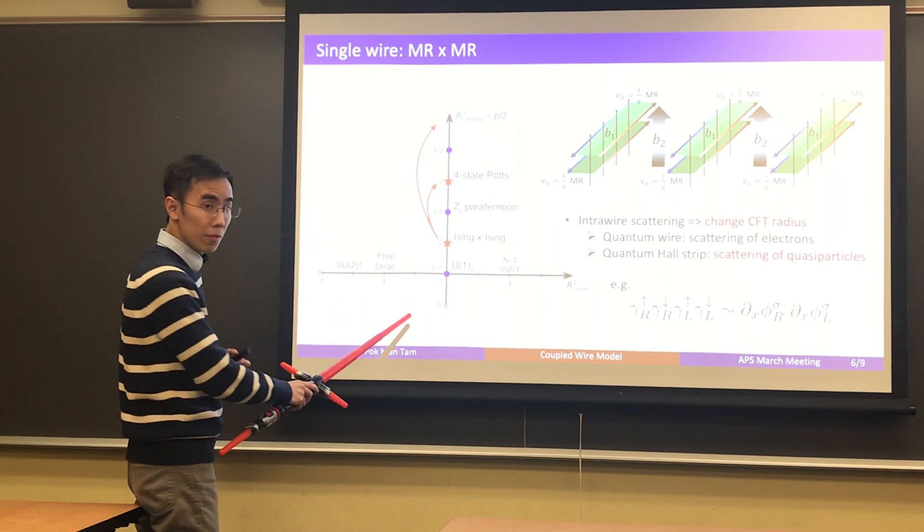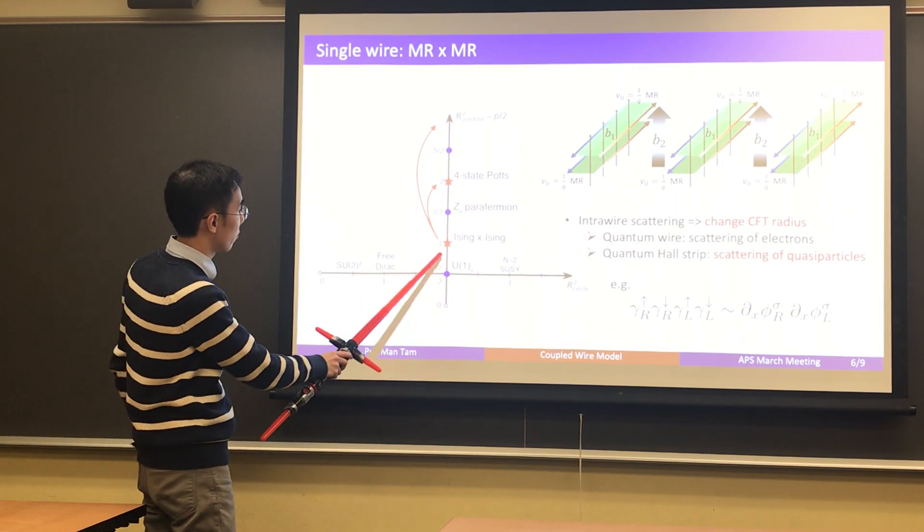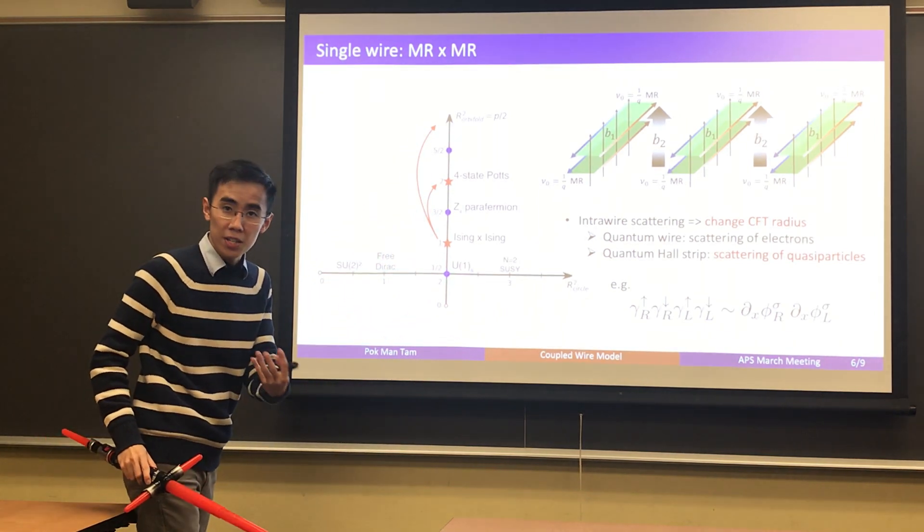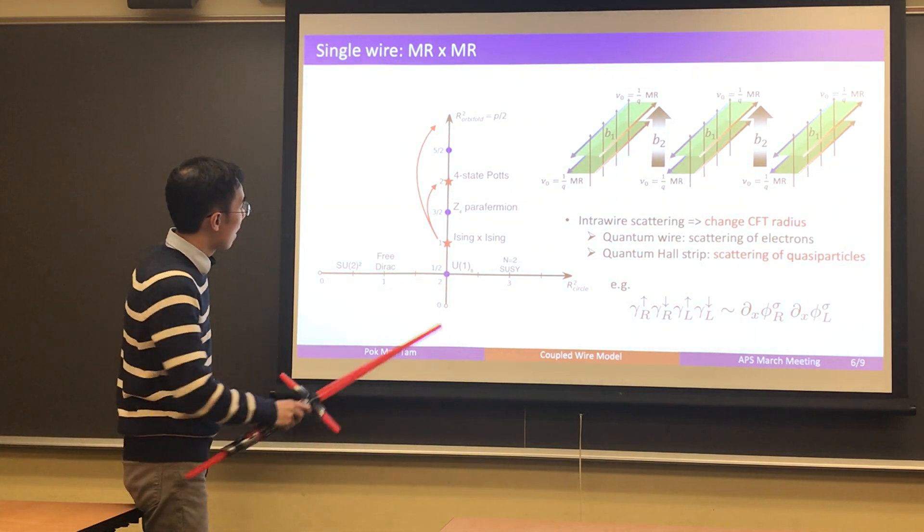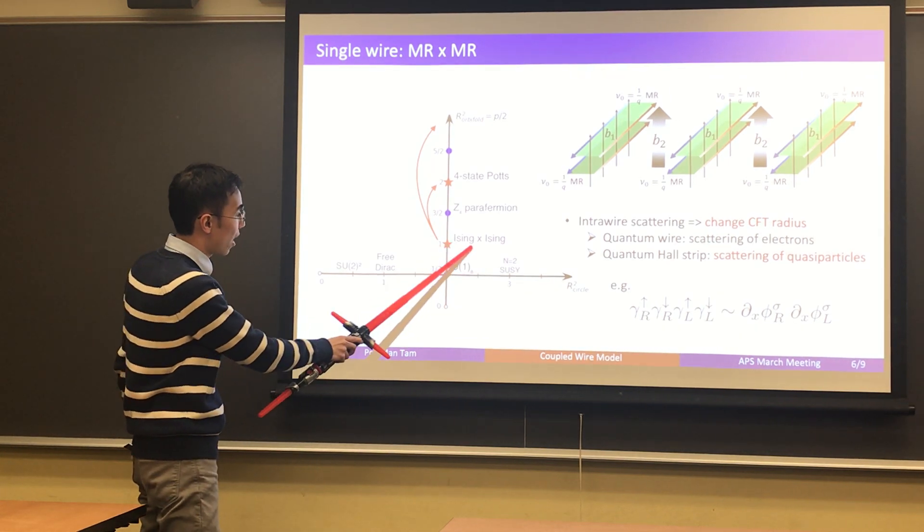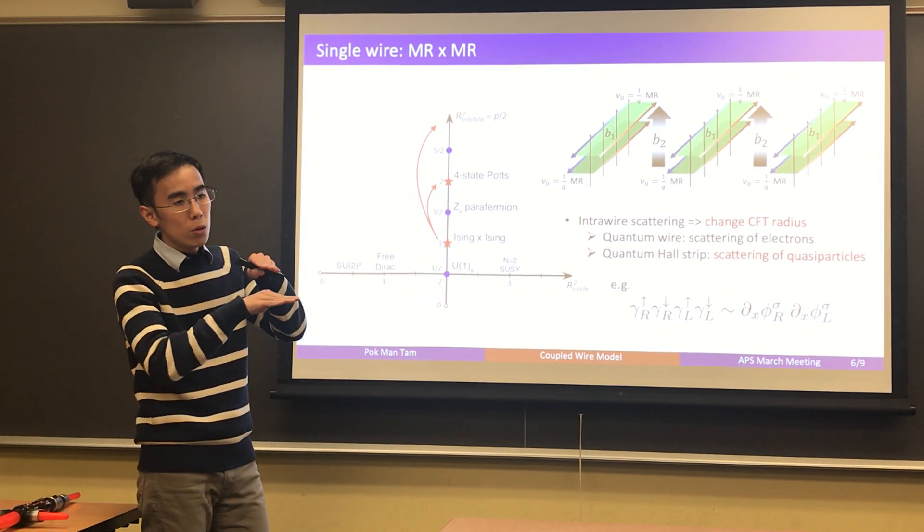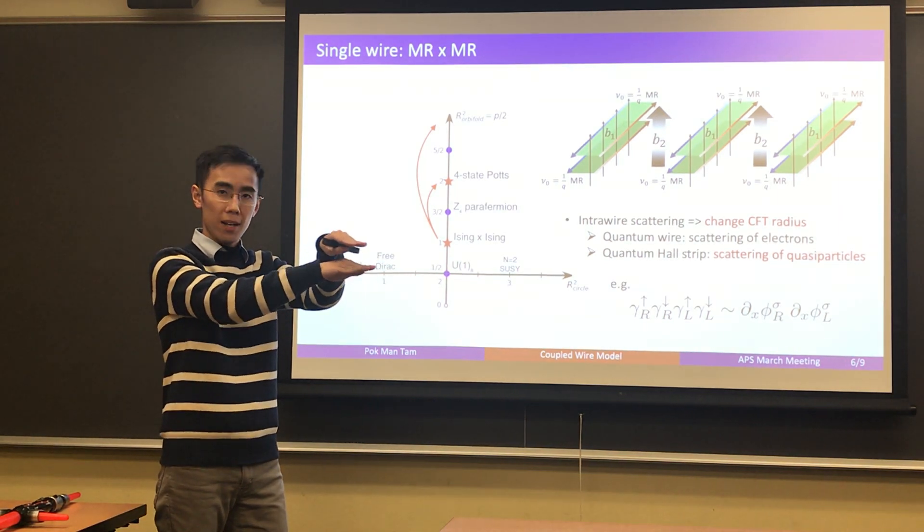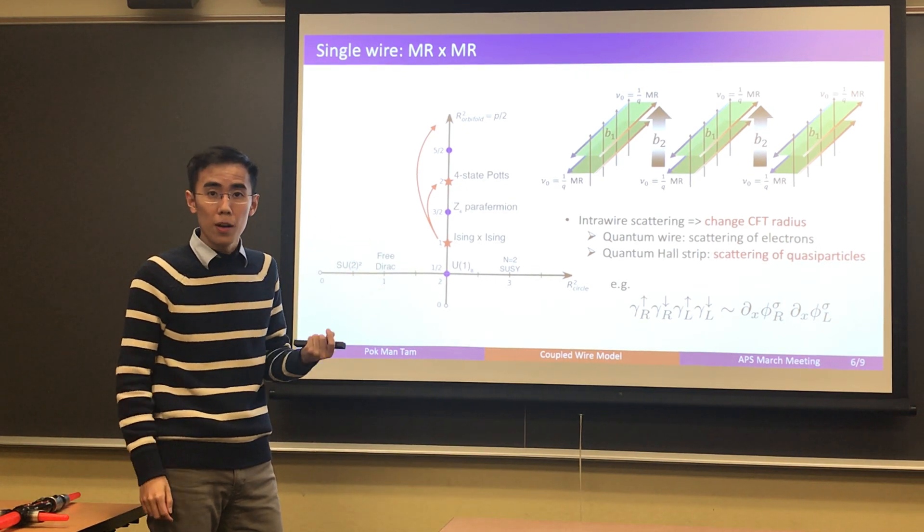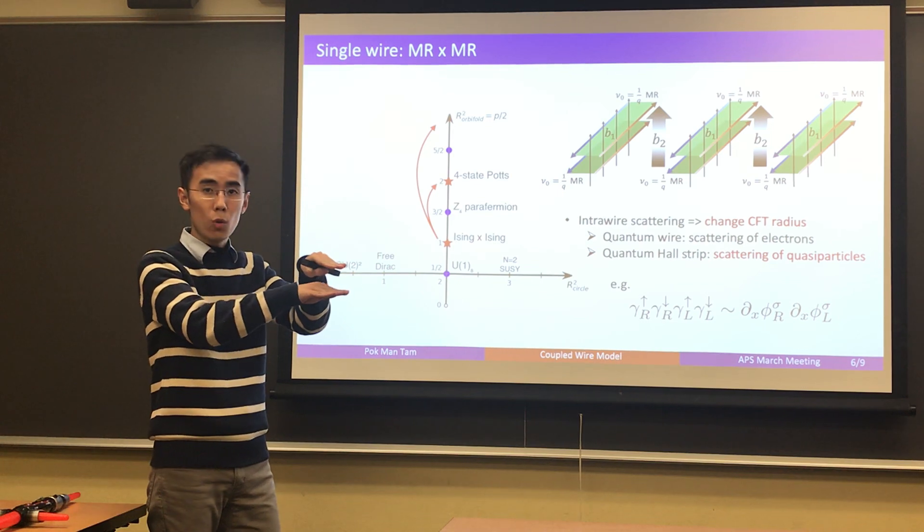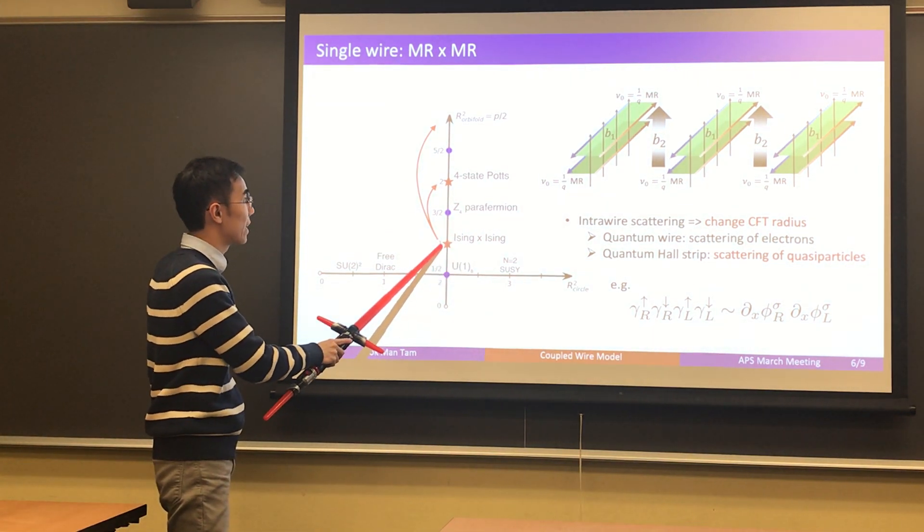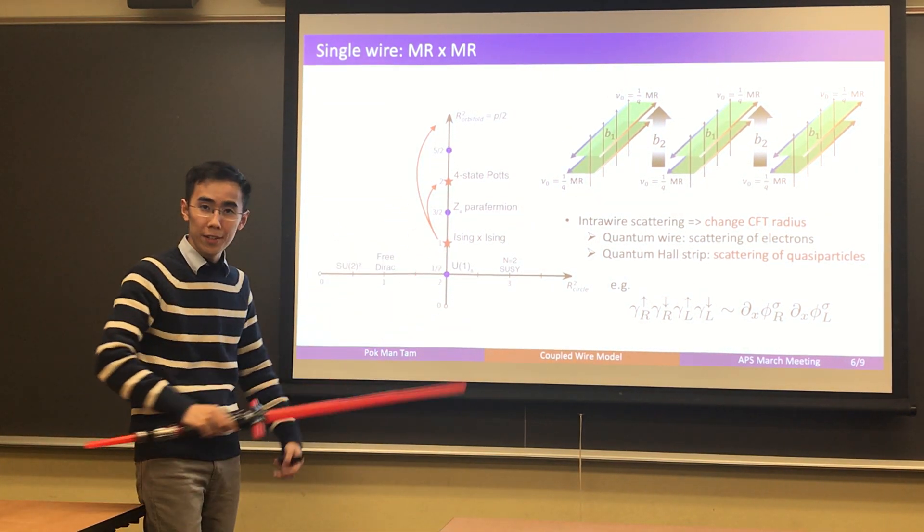In this story, it is not going to be a Luttinger liquid, because a Luttinger liquid is described by a circle CFT. But here we want orbifold CFT. To answer that question, we look back at this figure that summarizes orbifold CFT at a different radius. And we notice that actually, so these red points correspond to the even P orbifold CFT that we want to construct. And the simplest point actually is something that we are familiar with. We can actually construct this Ising cross Ising point by taking two layers of Moore-Read quantum Hall states, a bilayer of Moore-Read quantum Hall states. Because we know the neutral sector of Moore-Read quantum Hall is Ising CFT.